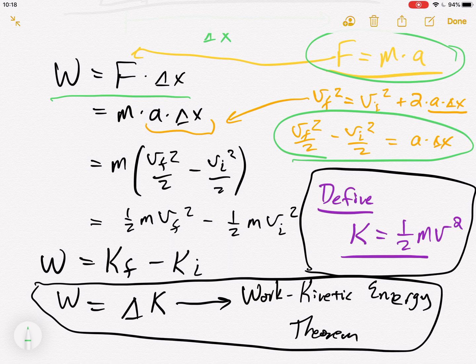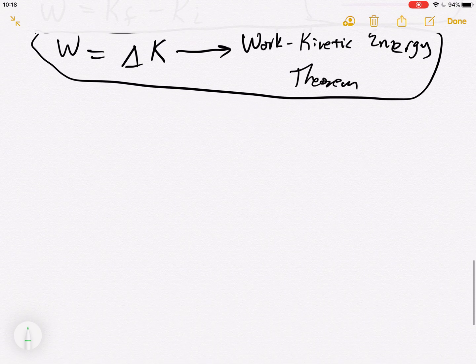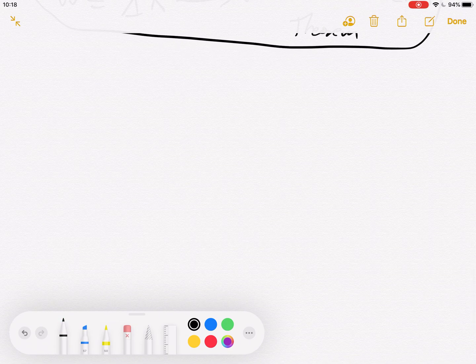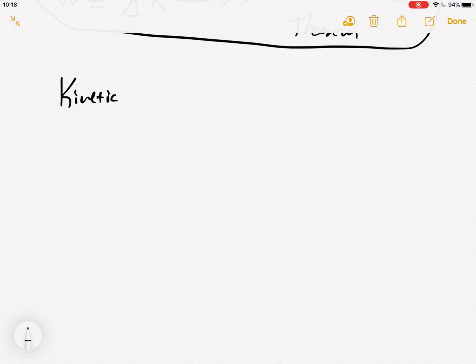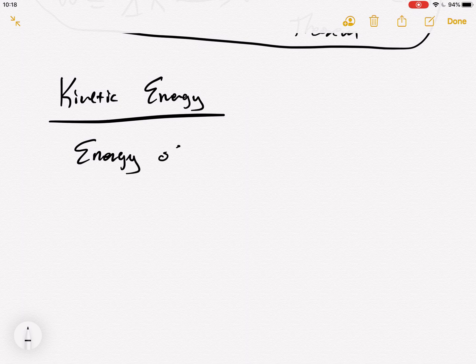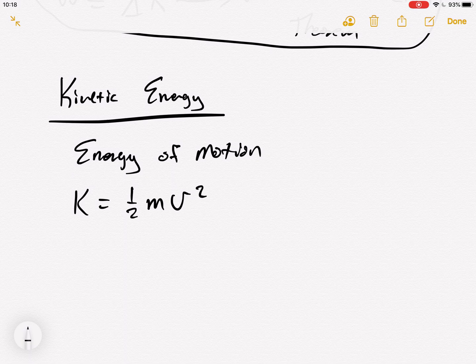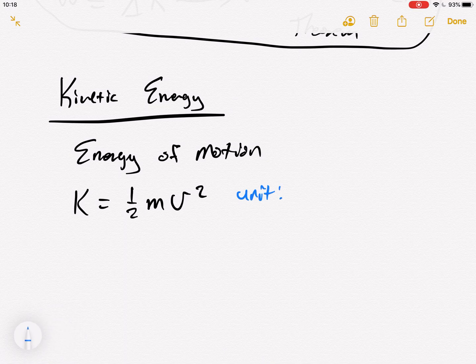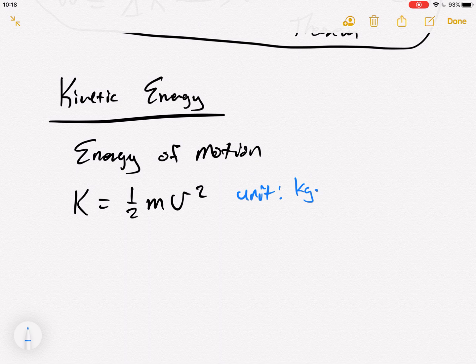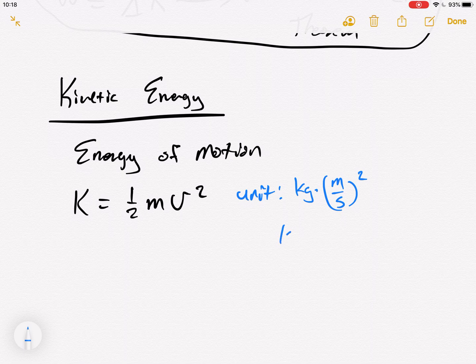So now we have a mathematical expression for kinetic energy. We already said kinetic energy is the energy of motion. So kinetic energy is the energy of motion, and it is half m v squared. Now look at this. The unit here is a kilogram times a meter per second squared.